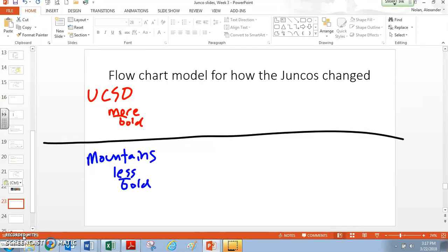We've got our two populations. We've got our UCSD birds, then we've got our mountain birds. I'm indicating that our UCSD birds are more bold and our mountain birds are less bold. This is an important part of our model, distinguishing the populations. But the question at this point is why? What is the cause of this boldness?